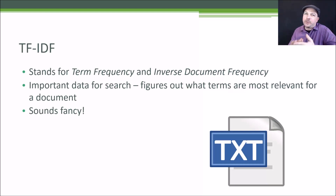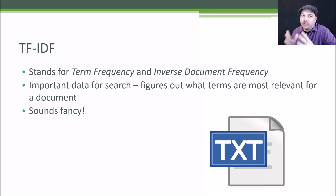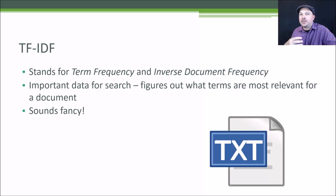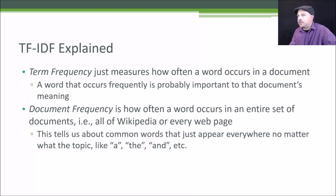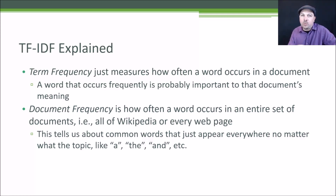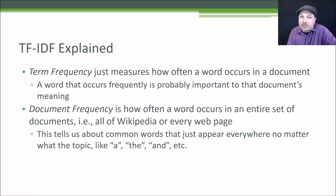TF-IDF stands for Term Frequency and Inverse Document Frequency — two metrics that are closely interrelated for doing search and figuring out the relevancy of a given word to a document given a larger body of documents. For example, every article in Wikipedia might have a term frequency associated with it for every word that appears in that document. All term frequency means is how often a given word occurs in a given document — the ratio of that word's occurrence rate throughout all the words in that document. That's all term frequency is.